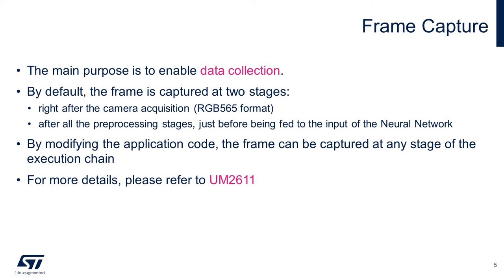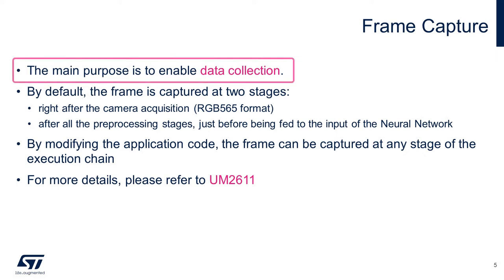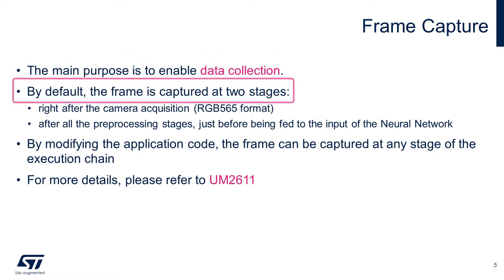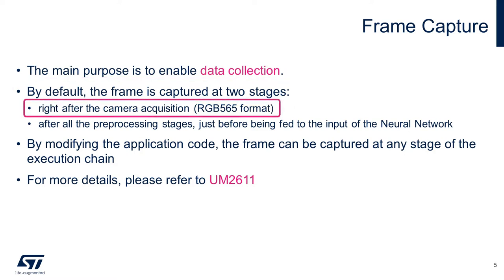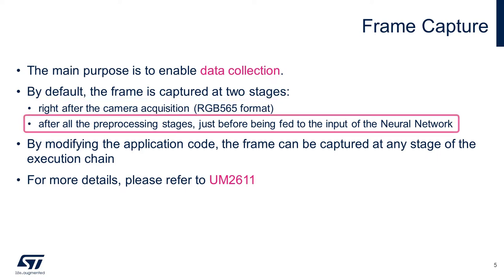Let's see more details about the three different modes. The main purpose of the frame capture application is to enable data collection. By default, the frame is captured at two stages: one right after the camera acquisition — that's the one we saw with 640x480 resolution — and one after all the preprocessing stages, just before being fed into the input of the neural network, the one we saw with 224x224 resolution.